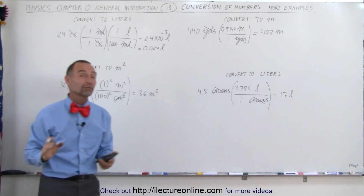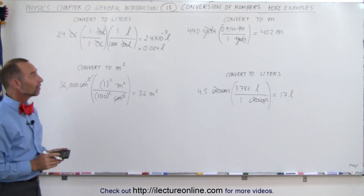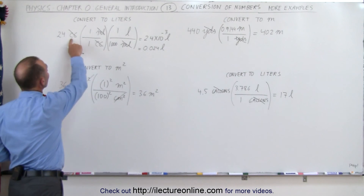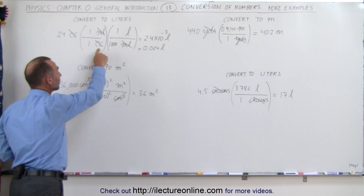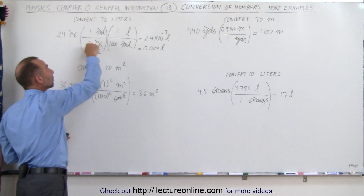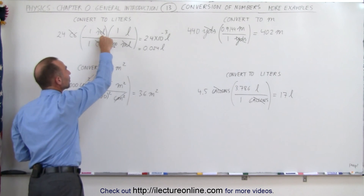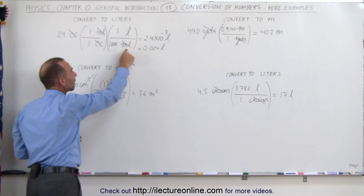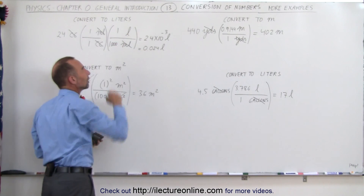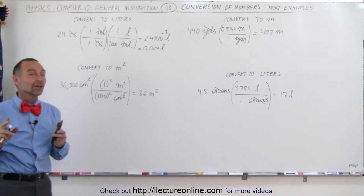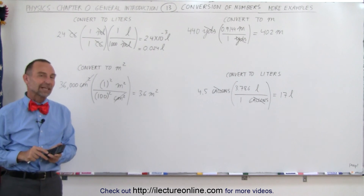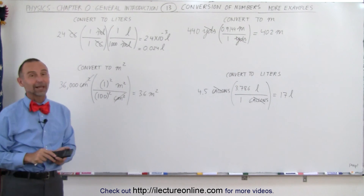The technique is fairly straightforward: whatever unit you want to get rid of, put it in the denominator, and put the new unit on top with the proper conversion factor. Put the units in place first and then the conversion factors, in order not to make mistakes. That's how we do unit conversions.